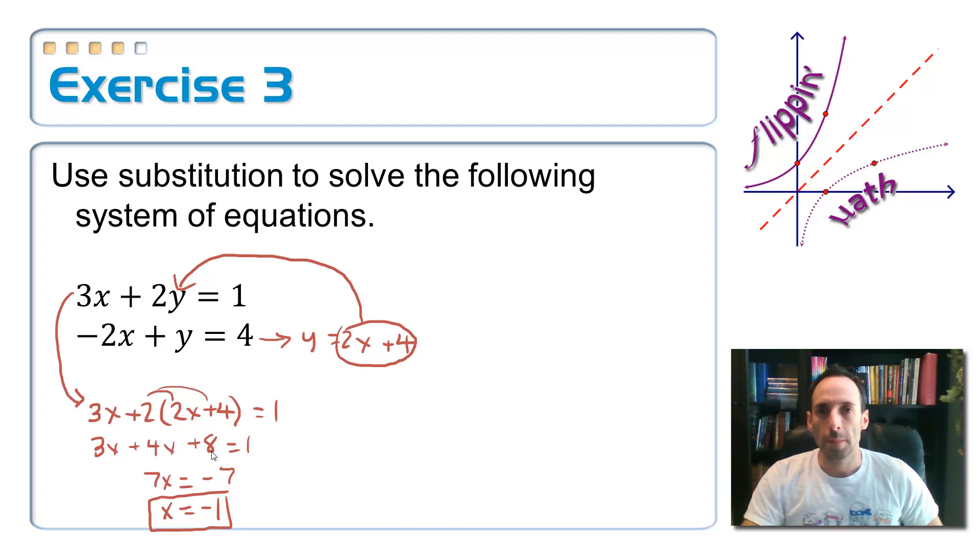I'm not quite done yet. I need the y value. Remember this is a point of intersection. I need an ordered pair x comma y. So we can substitute it in either the top equation or the bottom one, whichever one is going to be easiest. Well, since y is all by itself on the second equation, stick it in there. So here I get 2 times negative 1 plus 4. 2 times negative 1 is negative 2 plus 4 is 2. So there's the y value and your point of intersection is negative 1, 2.